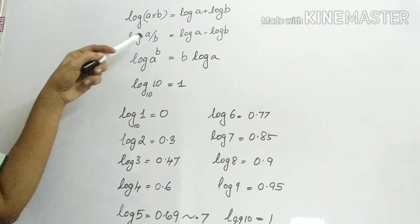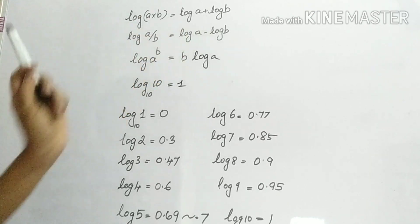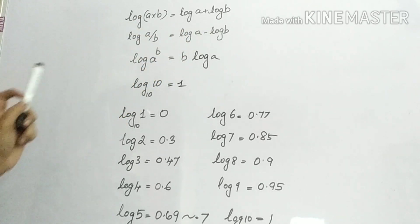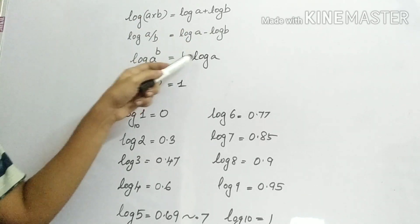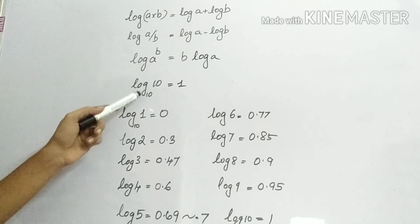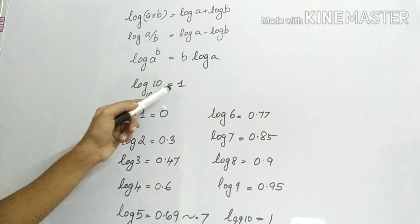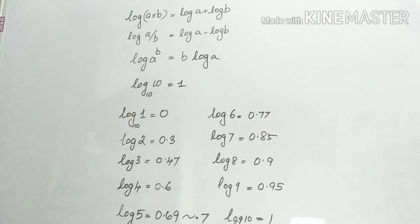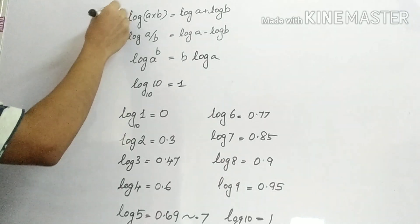Using log rules: log a minus log b, log a raised to b equals b log a. And then log 10 to the base 10 equals 1. You will have to remember this.